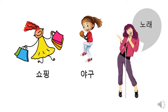쇼핑하고 싶어요, 야구하고 싶어요, 노래하고 싶어요. You wanna go shopping? 쇼핑하고 싶어요. You wanna go play baseball? 야구하고 싶어요. You wanna go sing a song? 노래하고 싶어요. Notice I've said all in respectful form — the common respectful form.